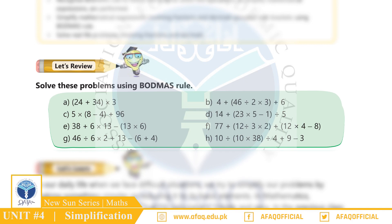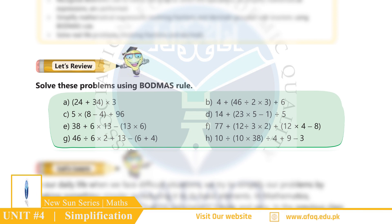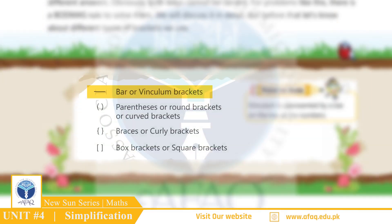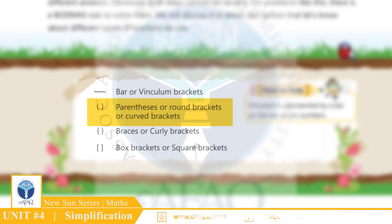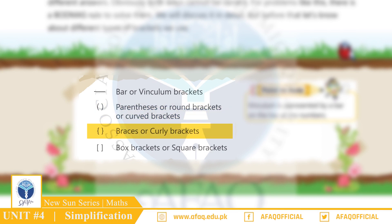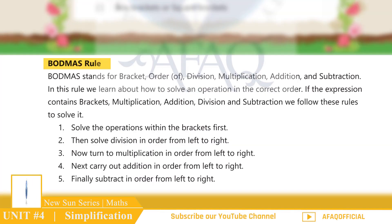Hamara agla topic hai 5.1 Simplification, Page 75. Arithmetic expressions ko solve karne ke liye hum BODMAS ka rule istemal karte hain. BODMAS ka rule padhne se pehle hum mukhtalif kism ke brackets samajhne ki koshish karte hain — Page 76: Bar aur Vinculum brackets, Parentheses aur Round/Curve brackets, Braces aur Curly brackets, Box brackets aur Square brackets.